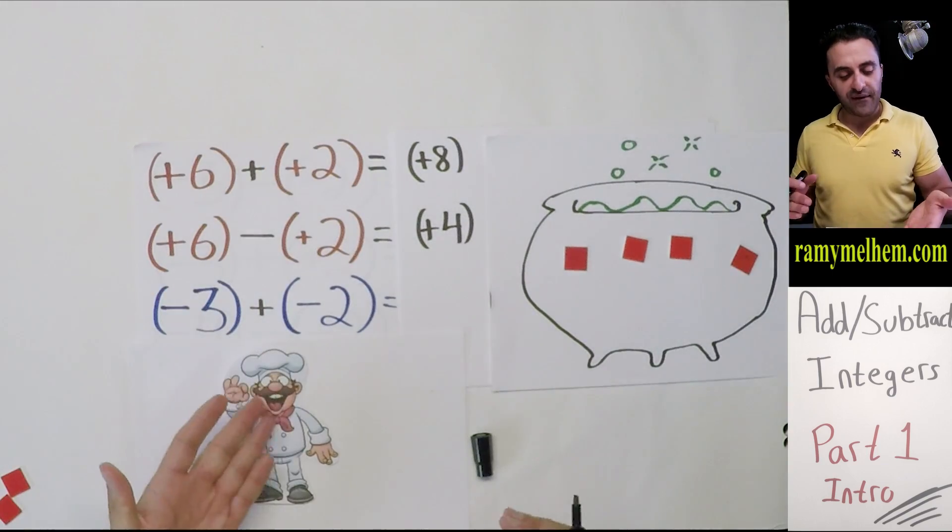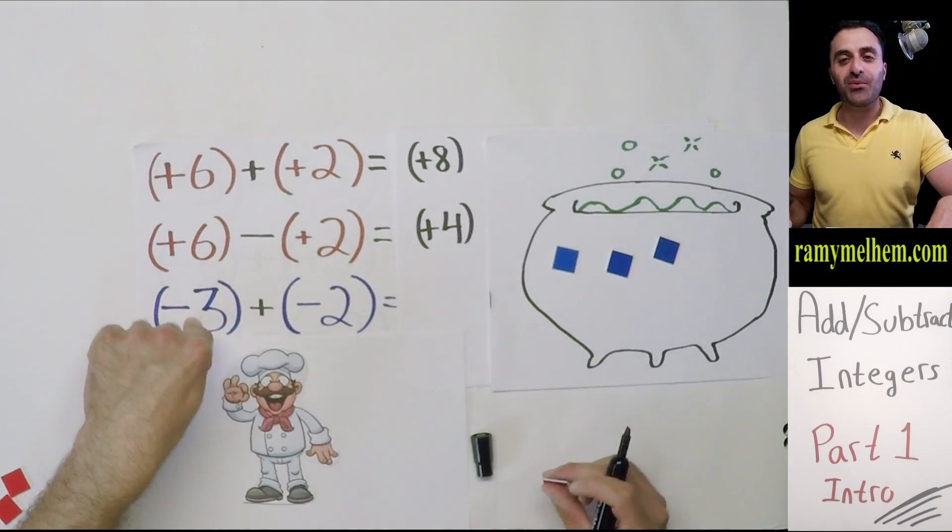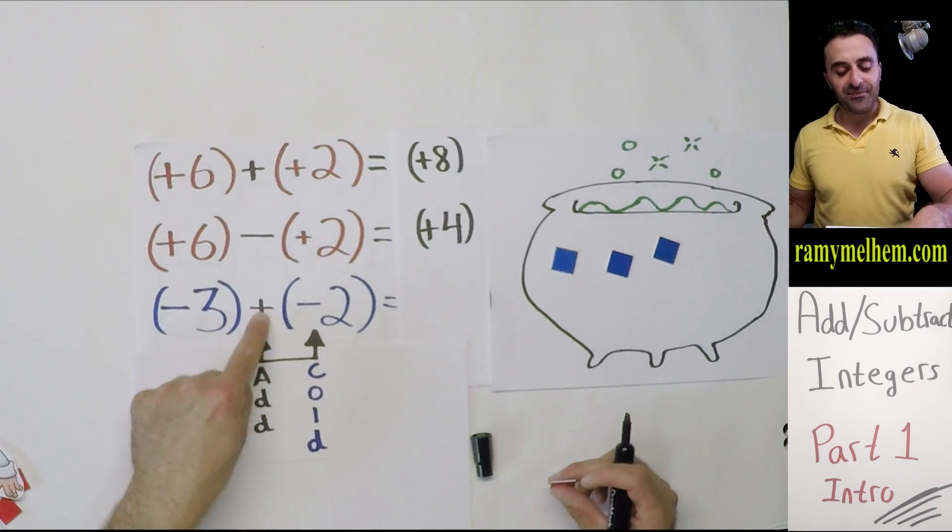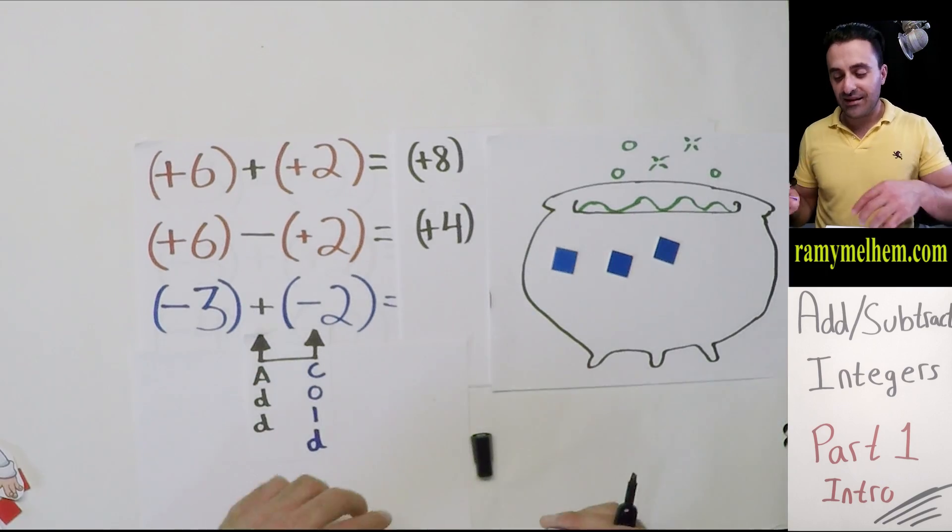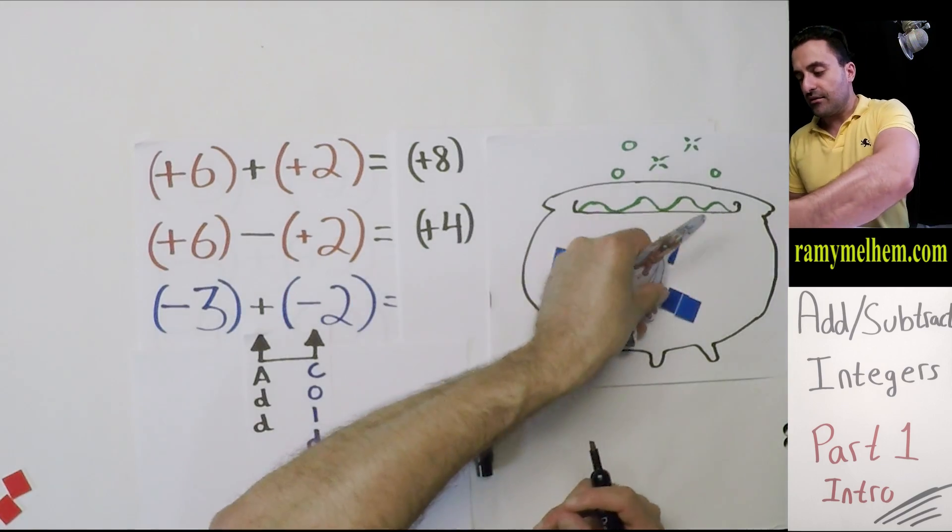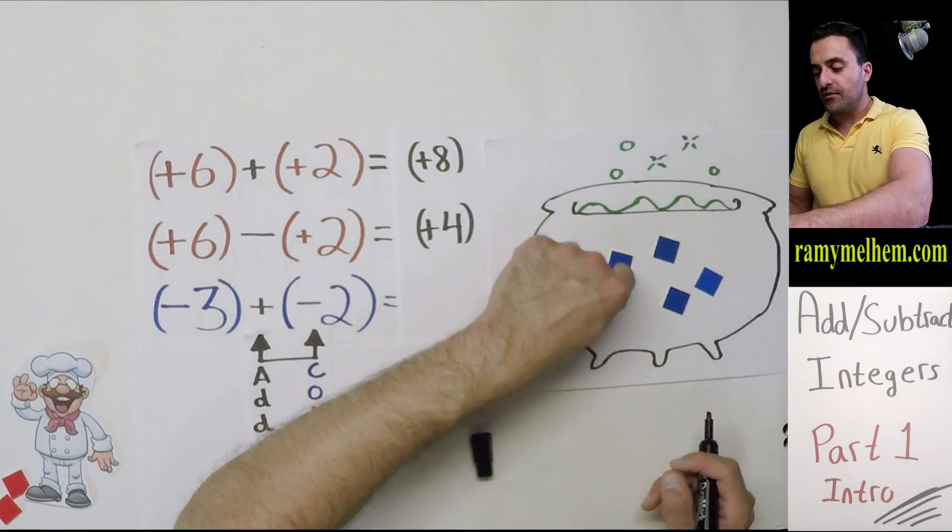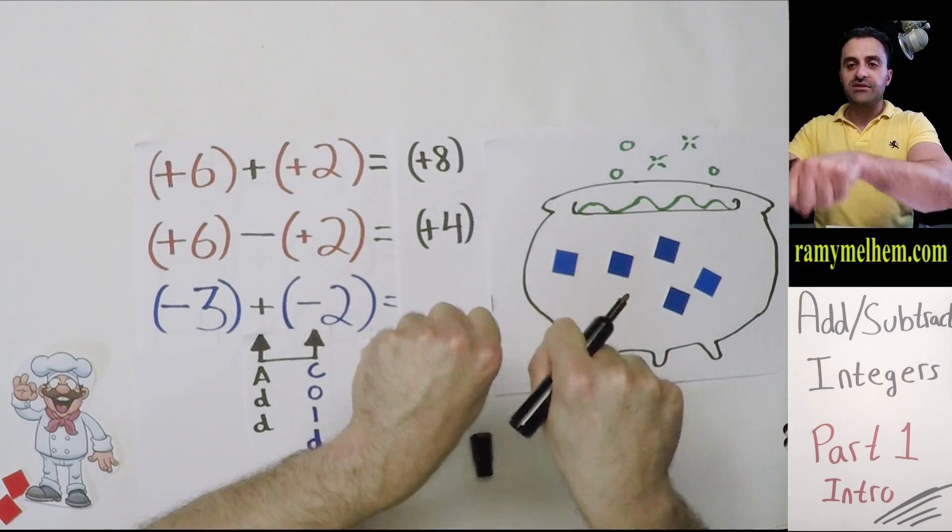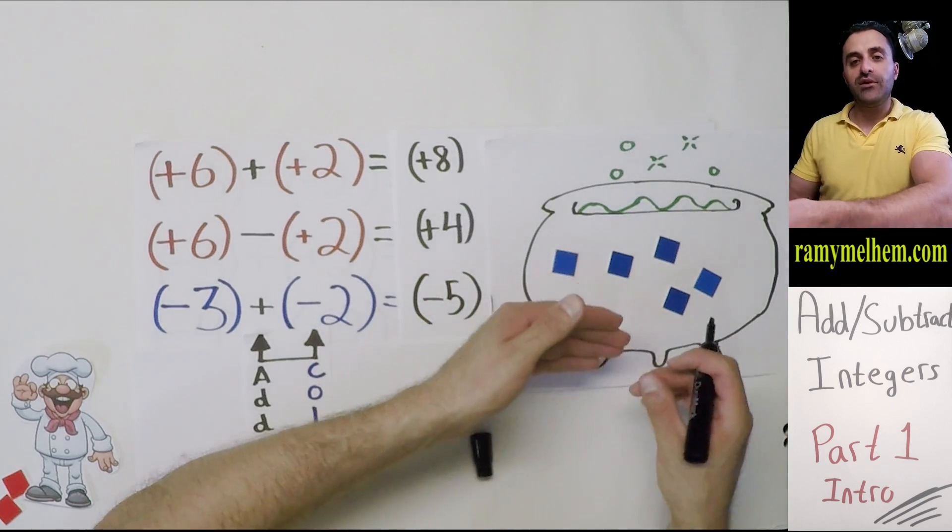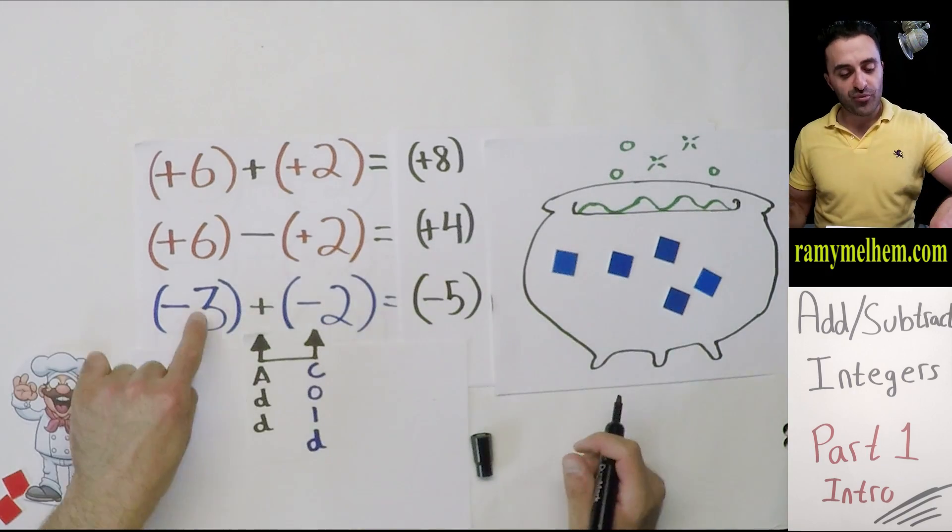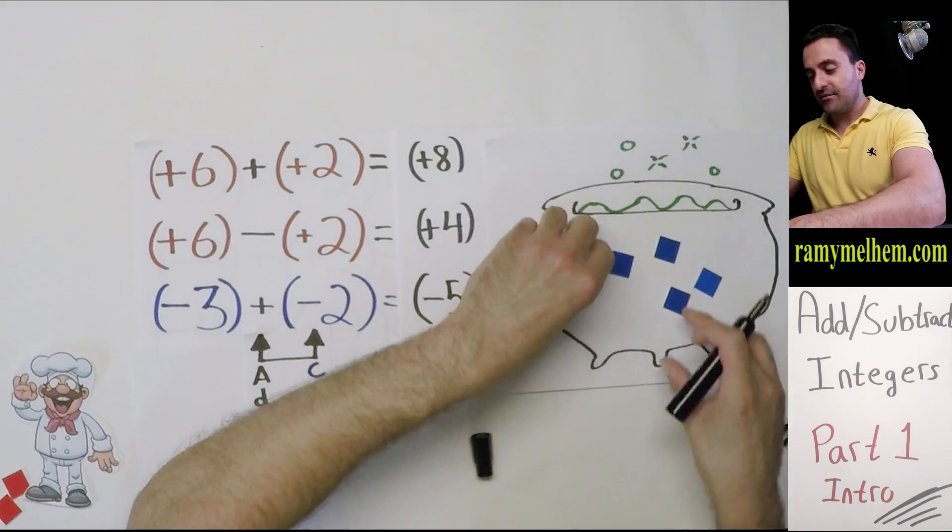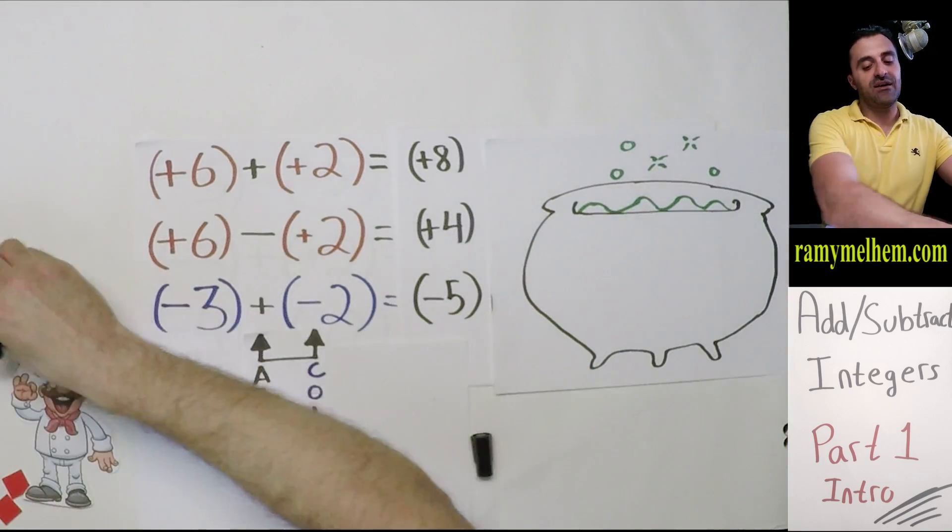The third example: negative three. The chef grabs three cold cubes. Then the recipe says to add two cold ones. He adds them in. We've got one, two, three, four, five negatives. It's cooled the soup down by five degrees, so the answer is negative five. When we added cold cubes, the temperature dropped because we're adding ice. It went from negative three to negative five, which is even more cold. Remember that it's got to make sense - don't just memorize stuff, have it sink in.